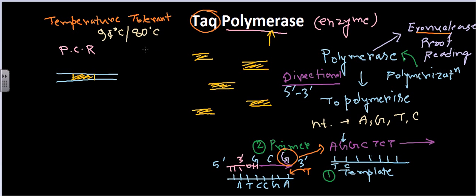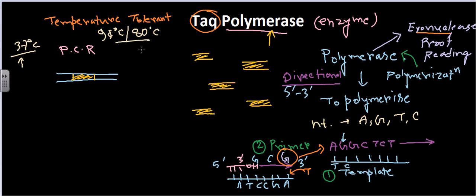Normal polymerases polymerize at room temperature or body temperature of 37°C, but if we increase the temperature the polymerization efficiency for normal polymerase drops down. Taq polymerase has the enormous capability of continuing the polymerization process at high temperatures.